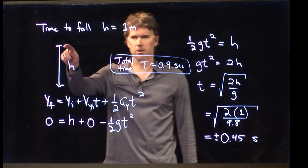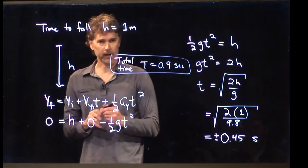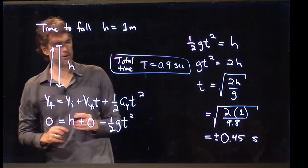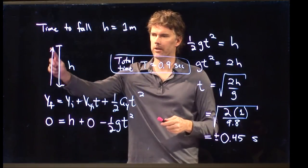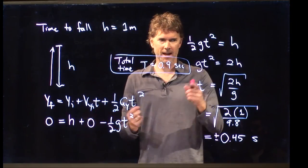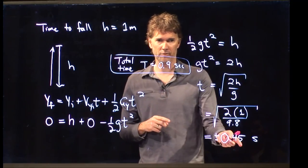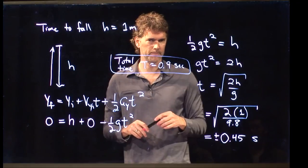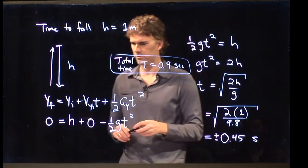We set the clock to t equals 0 up at the top. But if I run that clock backwards in time, that minus 0.45 exactly corresponds to how long it took them to go up. So the fact that the motion is symmetric means that the clock can run forward and we get 0.45, or it can run backwards and we get the negative 0.45. So that actually does have physical significance, which is kind of cool.